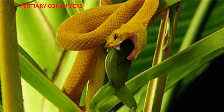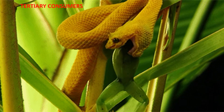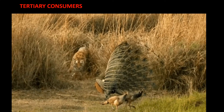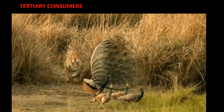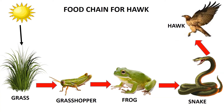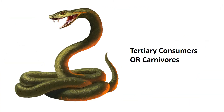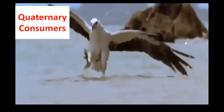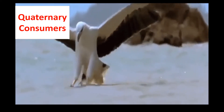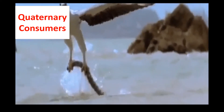If an animal eats a secondary consumer, it is called a tertiary consumer. In this example, the snake is called the tertiary consumer. The tertiary consumers are eaten by quaternary consumers.